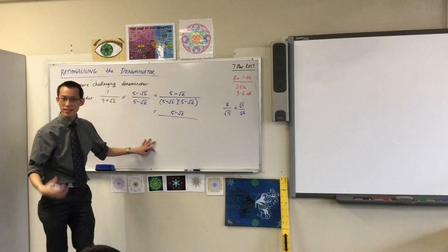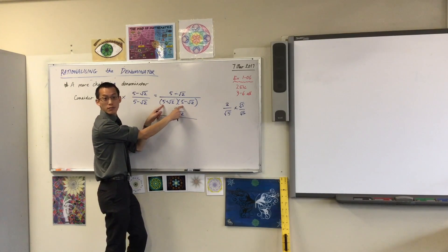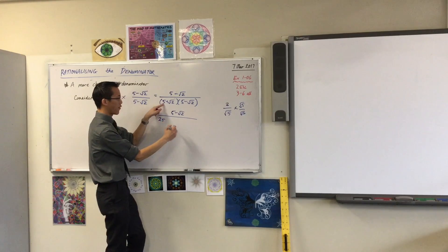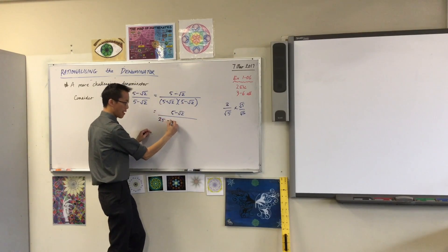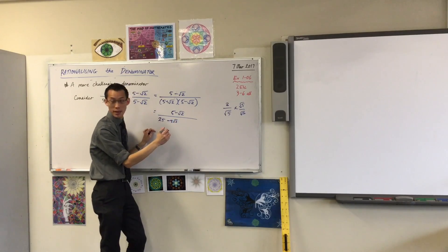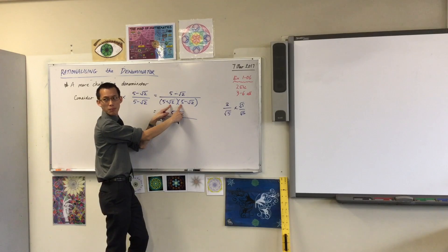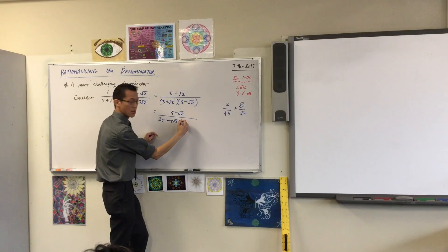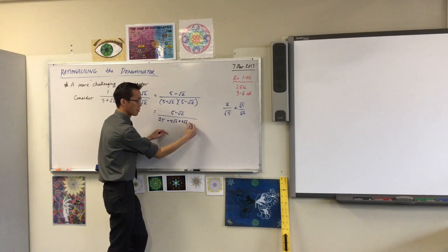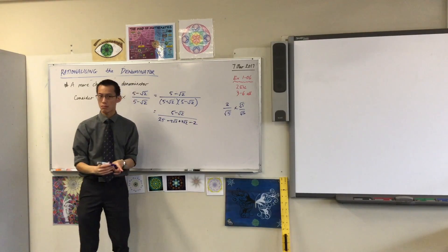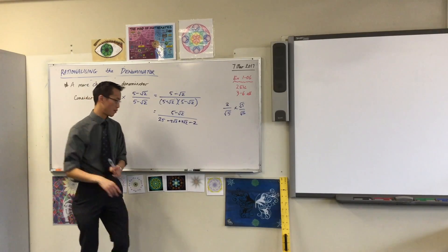If I start to expand this denominator, help me out. 5 times 5. 5 times minus root 2. Minus 5 root 2. Okay, that's the first pair. Now I'm going to do this guy times that. What's that one? Plus 5 root 2. And then this one? Minus 2. Did we get it all right? 4 terms. Does it all look good? I'm pretty happy with it.